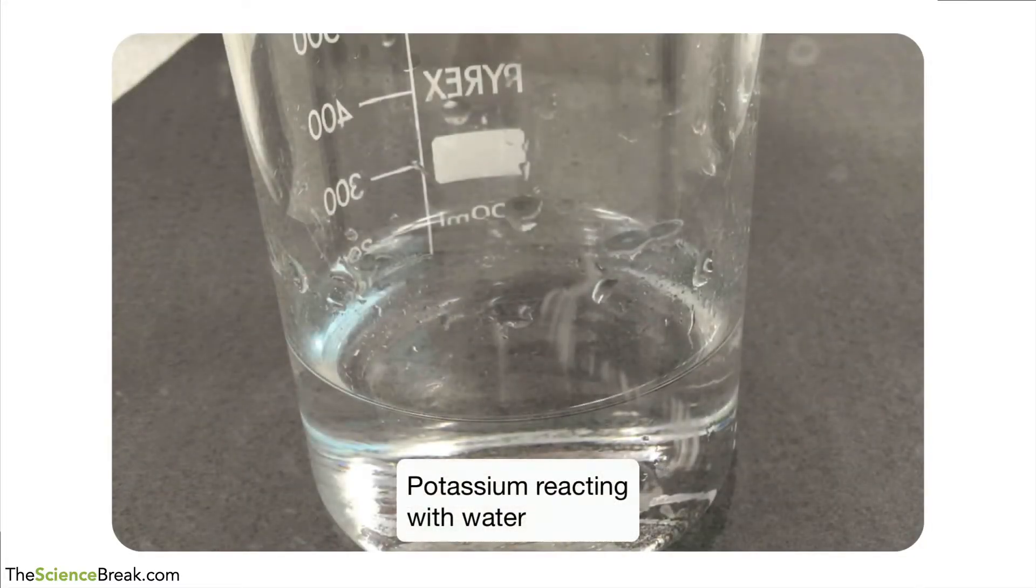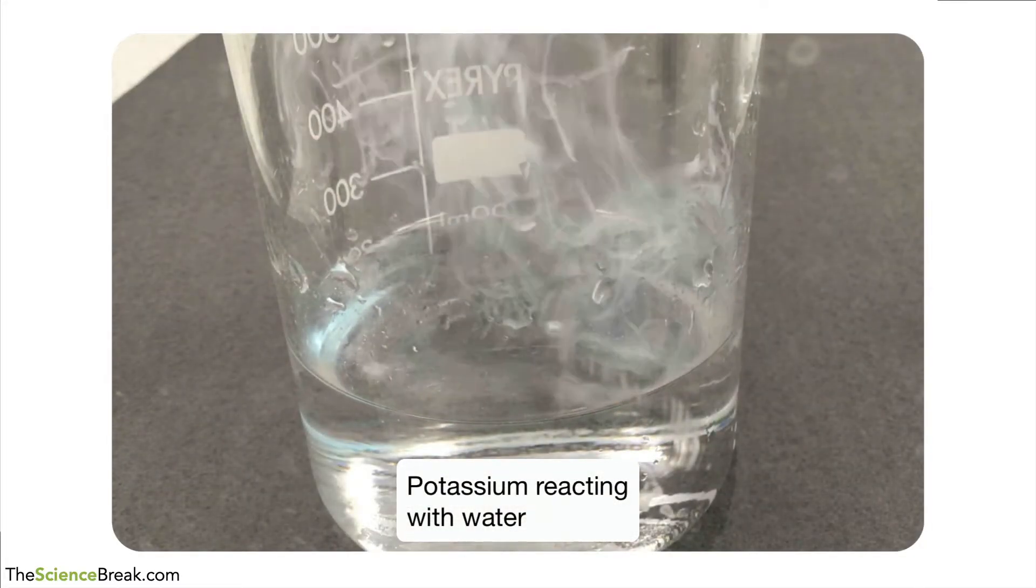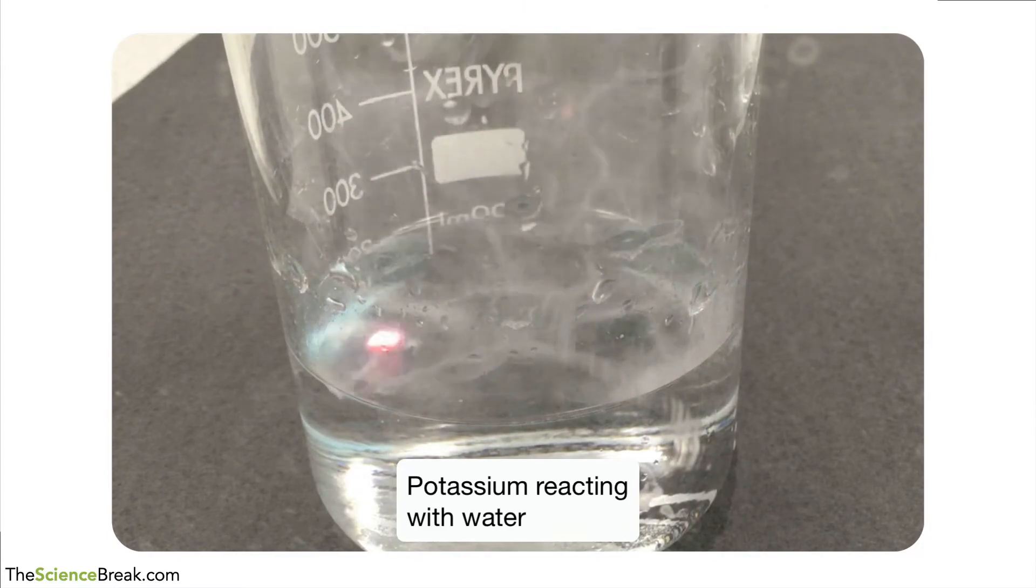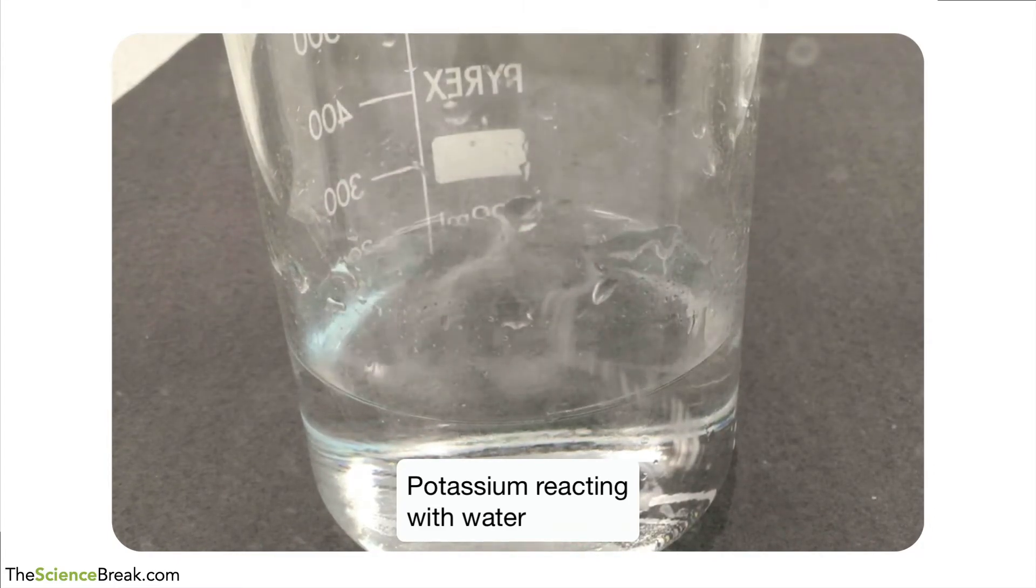We can actually take a look and see how that reacts in water. So here's a beaker of water, we put in some potassium and you can see straight away sparks fly and it catches fire. That's a very vigorous reaction. Potassium is a very reactive metal so it goes right at the top of our reactivity series of metals.